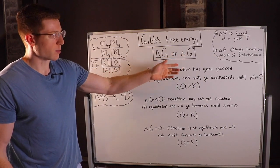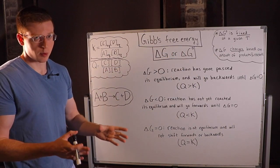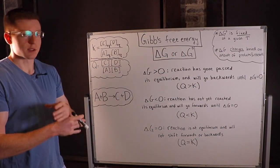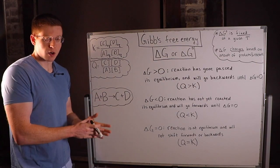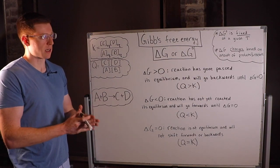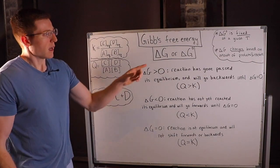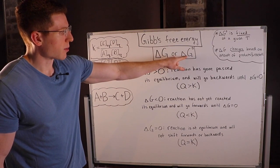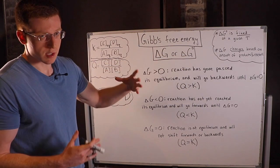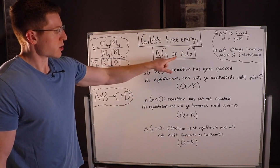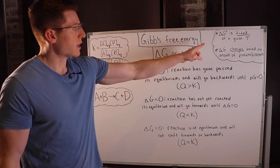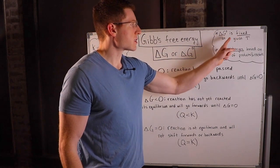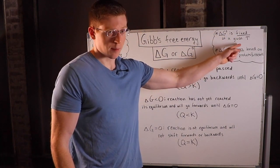If you have a gas, it'll be at one bar pressure for standard state. If you have a solution, it'll be at one molal concentration for standard state. This describes a reaction at its equilibrium at a given temperature. Delta G with the degree symbol is fixed for a given temperature.